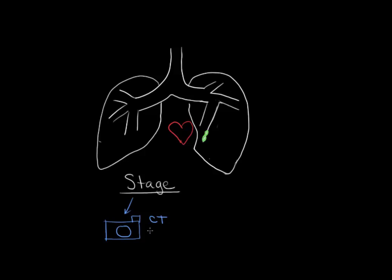A CT scan is several x-rays compiled together to generate a 3D view of the cancer cells. Or I might use an MRI — magnetic resonance imaging — which gives a similar image to the CT scan but doesn't use radiation. Finally, I might use a PET scan, or positron emission tomography, which also gives a 3D image but is based on highlighting the high metabolic activity of these rapidly dividing cancer cells.